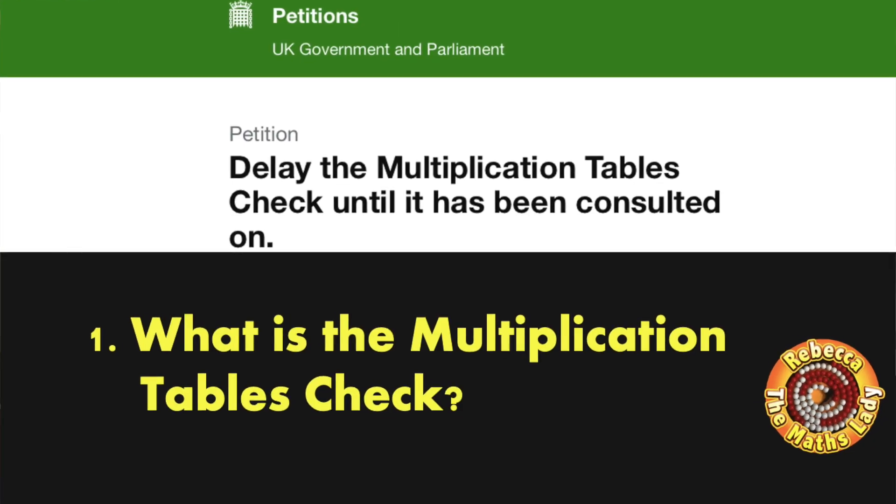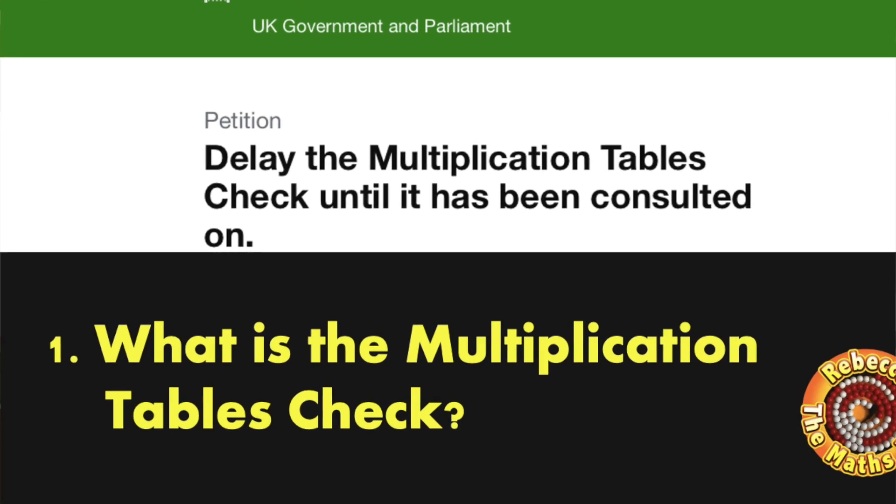Question one: what is the multiplication tables check? It's a new exam designed to ensure that children learn their multiplication tables properly, and it's going live this summer in year four. So nearly all children in year four — who will be either eight or nine years old — will have to take this test. There will be some exemptions, particularly for children with special needs. If you want to see the full specification, look for the 2018 multiplication tables check specification on the government website — I'll put a link in the description.